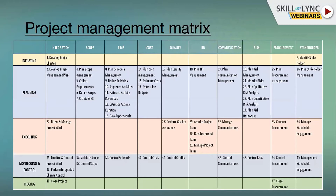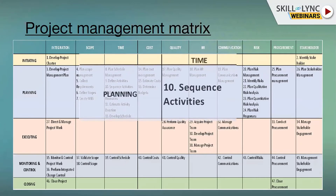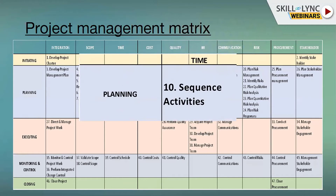Out of all 47 components of the project management matrix, today we will just be discussing number 10 — sequence activities. This is a cross-function of the planning phase of the project and it falls under time management.